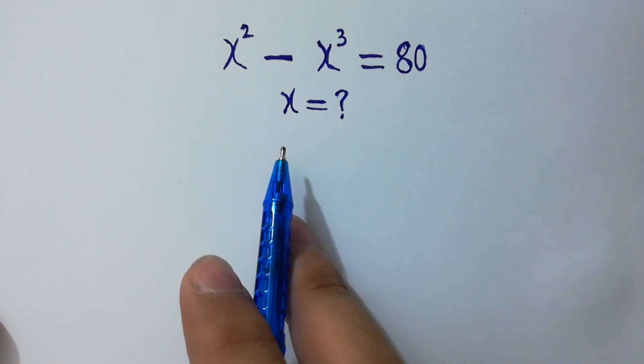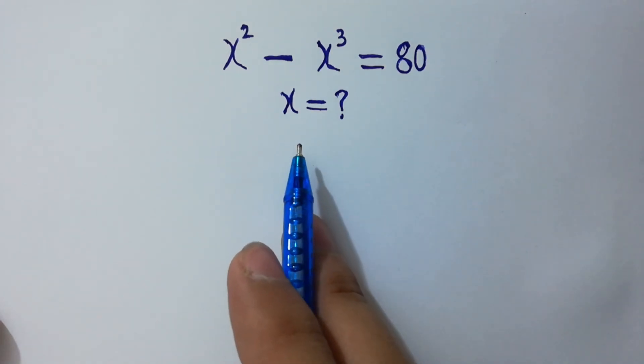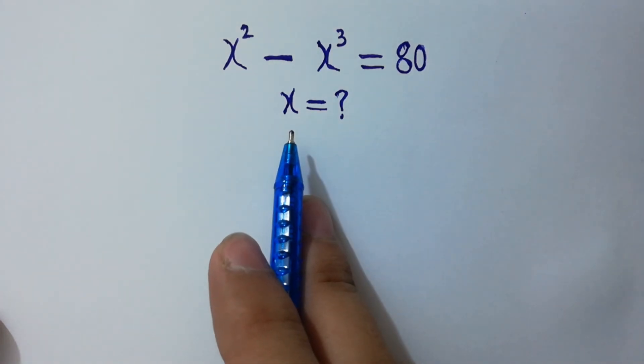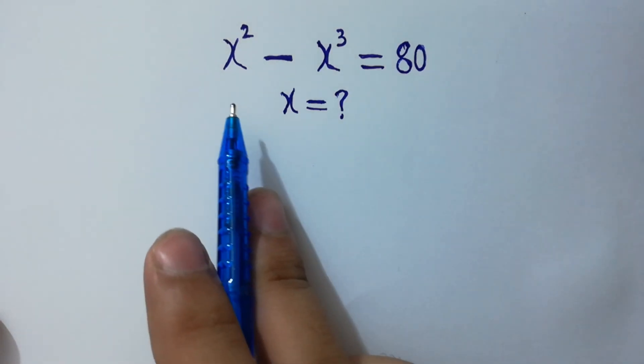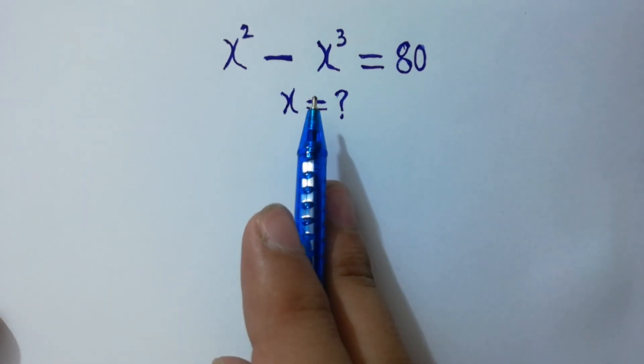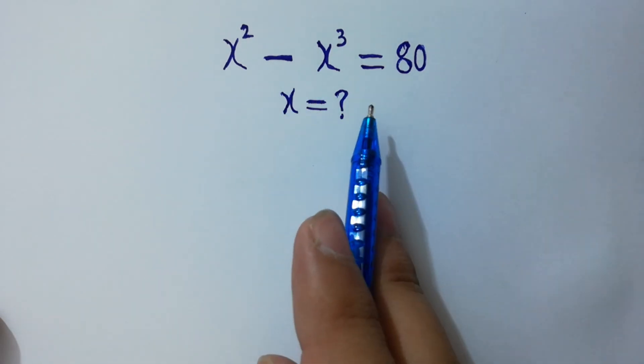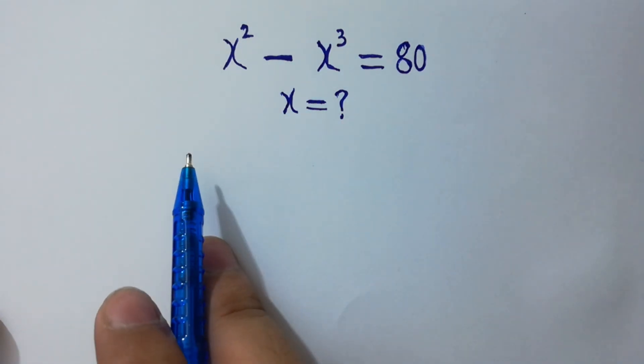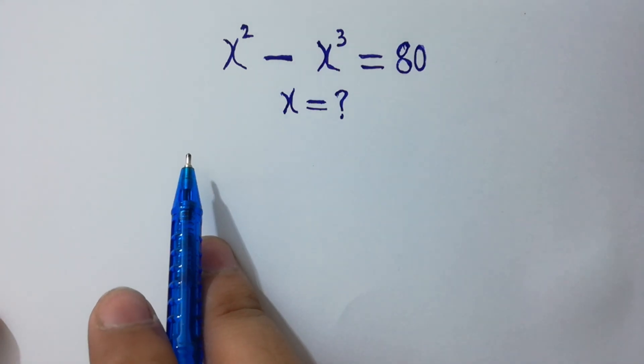Hello friends. Find the value of x if x squared minus x cubed equals 80. Let's solve it.